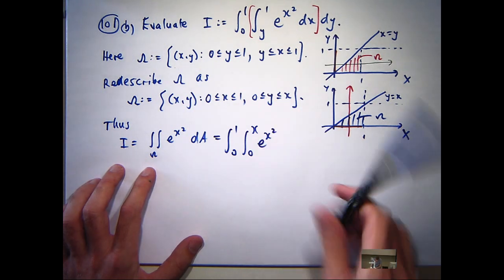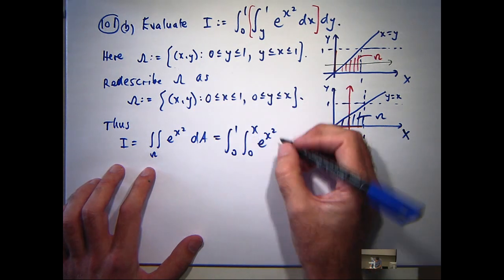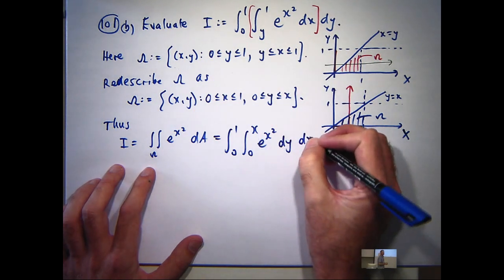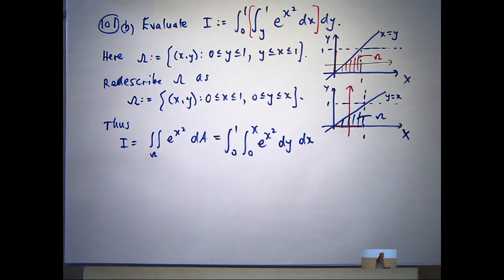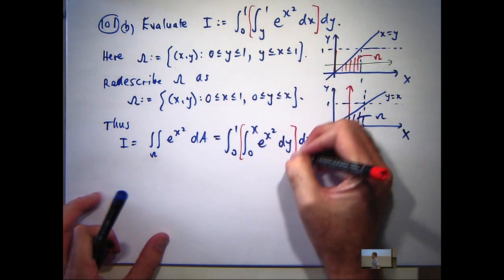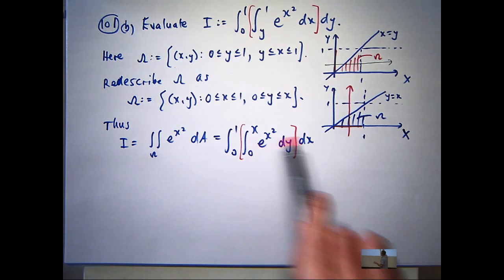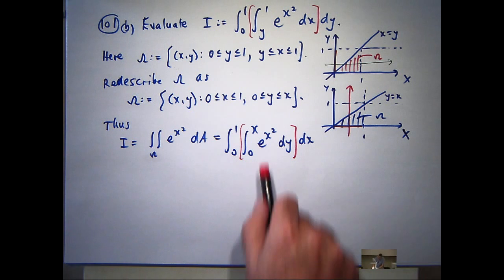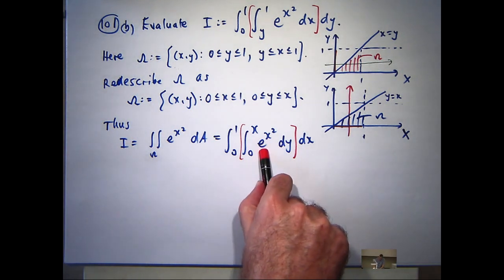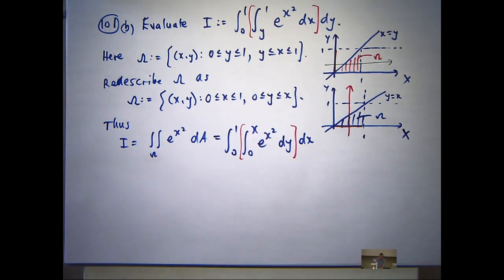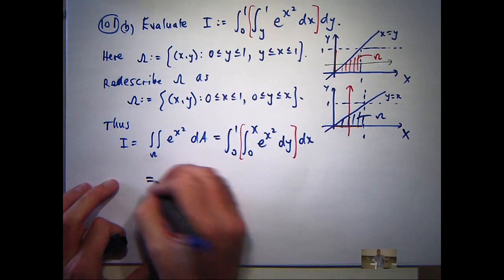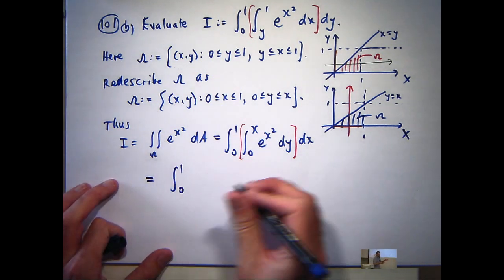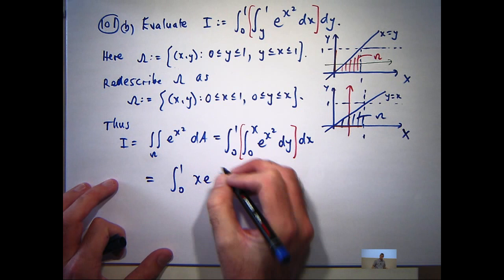Okay, so y is between 0 and x, so the dy will go next, and then the dx. So now, what I can do is perform the inside integral first. The indefinite integral is going to be y e to the x squared, sub in these. I'll get x e to the x squared dx.